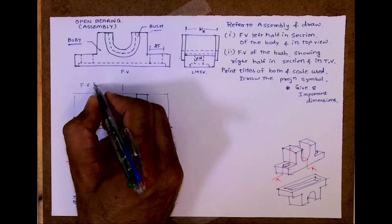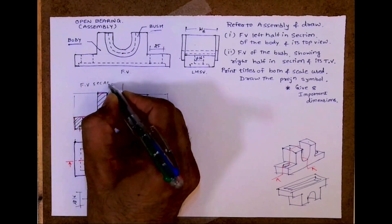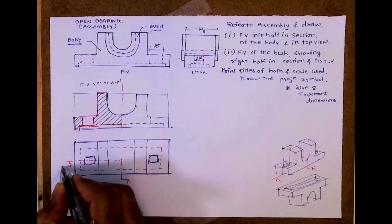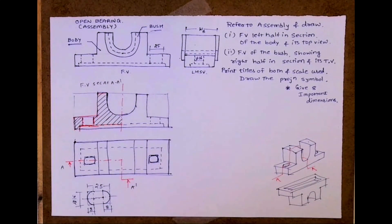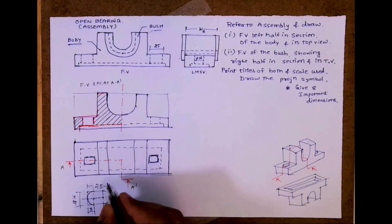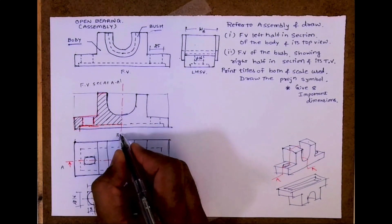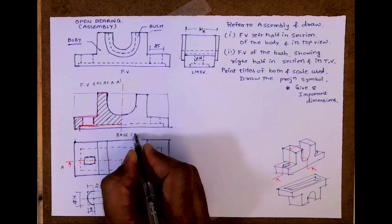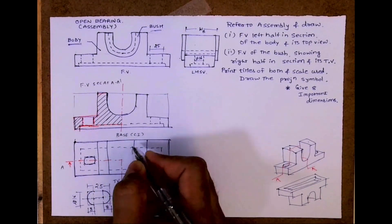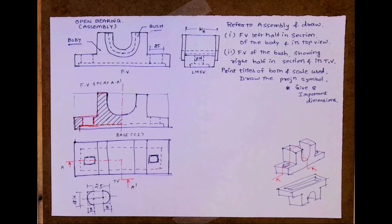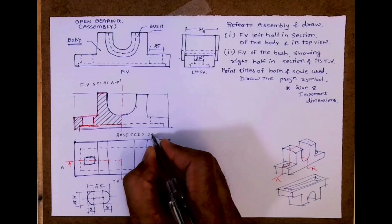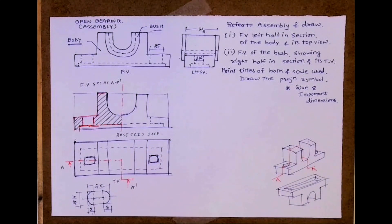So we will write front view section A-A. This is A-A dash. So we can write top view here. So we are done with first part. That front view left half in section of base. Base is made up of CI. If it is not mentioned you can write CI. Base is generally cast iron. And one of, that means one quantity.